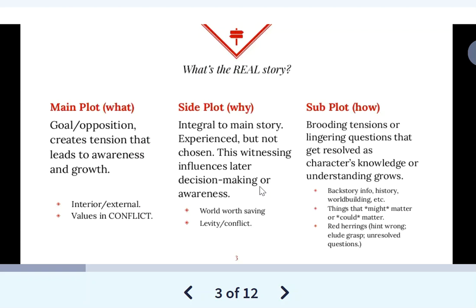By remembering this side plot episode later, your character will be able to make a very difficult choice because it meant something — even if they didn't see it right away. So to sum up quickly: the main plot is the what, the side plot is the why — why does this matter, why is this relevant, what are their motivations? Finally, the subplot is the how. I like to use what, why, how as an easy way to split things up. The subplot is the brooding tensions or lingering questions that get resolved as characters' knowledge or understanding grows — basically all the questions they have and the answers that are not forthcoming.